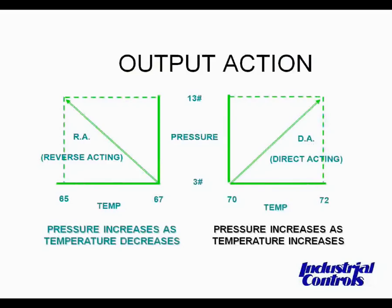In proportional control, things aren't quite so simple. We need to look not only at the action we want, but also what the safe position of the valve or damper should be. Pneumatic actuators all have springs under their diaphragm. This means that the actuator will always go to a normal position on loss of air pressure. It's up to the person who engineered the job to make sure the actuators take the proper normal position and also work properly.